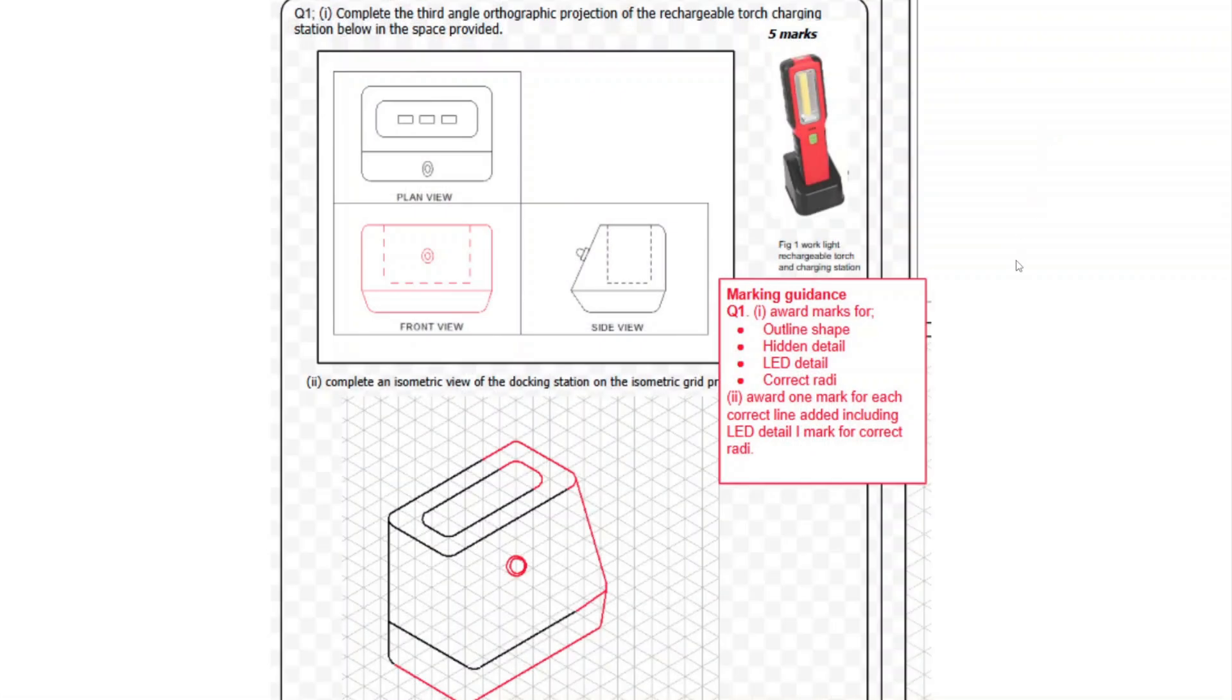Okay, let's look at the mark scheme here. So it's quite a basic mark scheme. We've got the completed front view there. We've got the completed isometric. And the marking guidance says, award marks for outline shape, hidden detail, LED detail, correct radii.